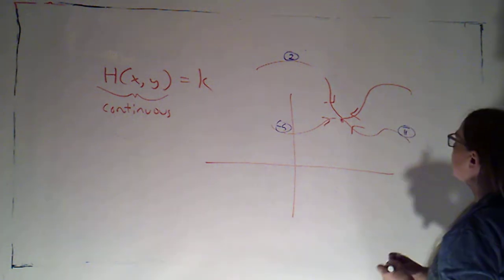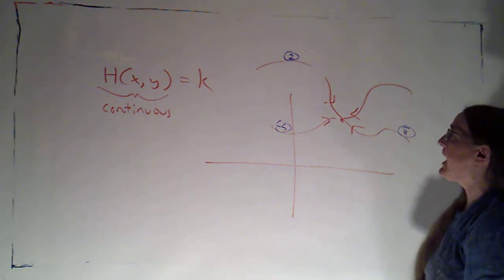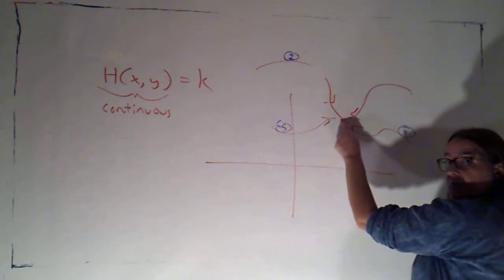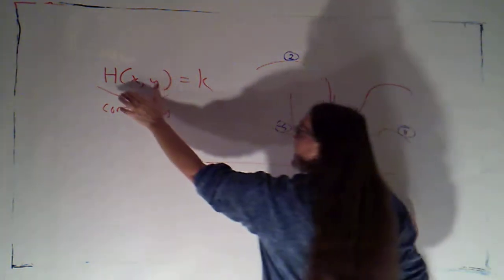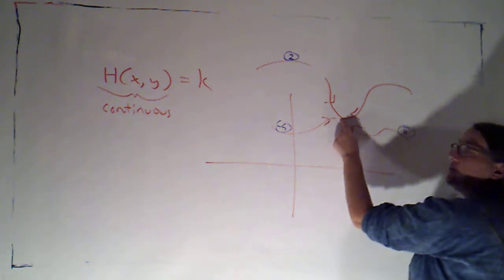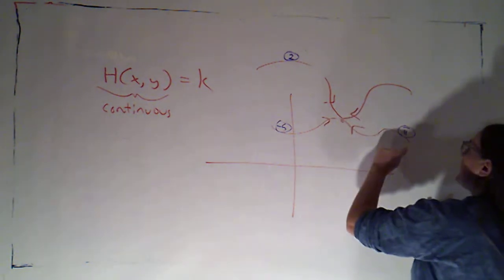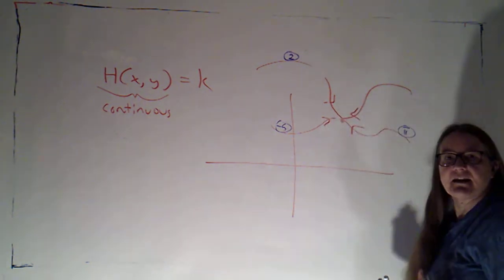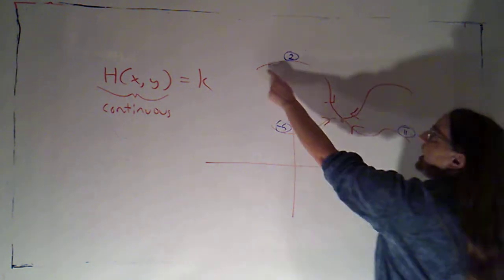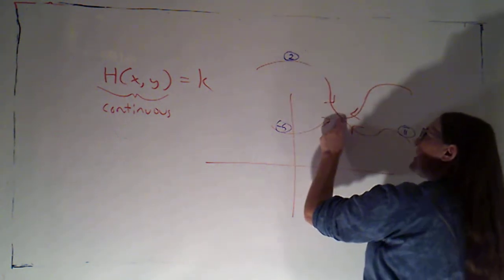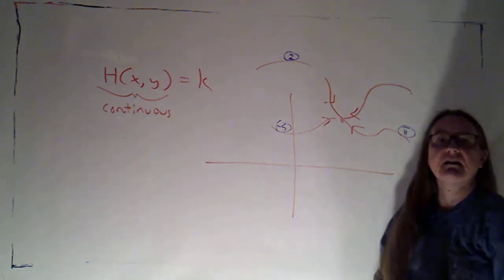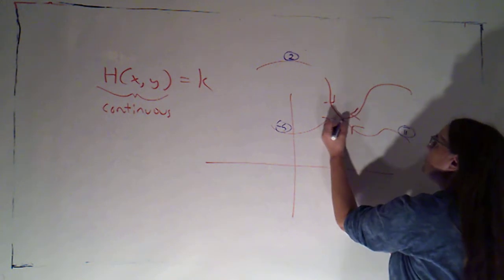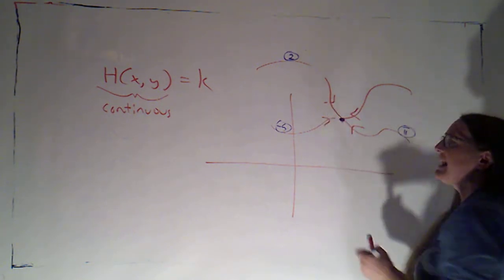If I have level curves for different values, then I can get arbitrarily close to this point with h of xy taking on a value of negative 5. And I can get arbitrarily close to that point with h of xy taking on a value of pi. And I can get arbitrarily close to that point with h of xy taking on a value of 2. But then what's the value of h of xy here?